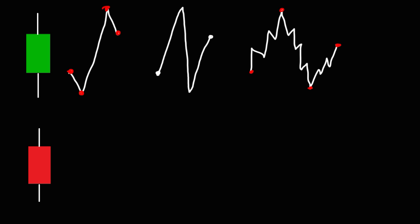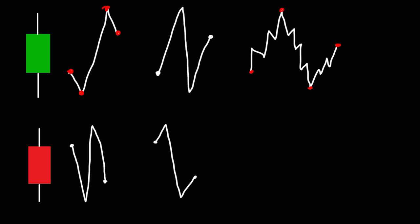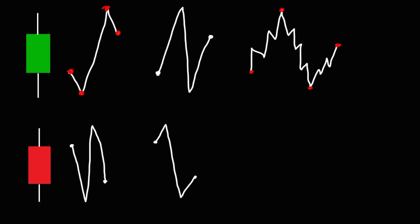For the other candlestick on the bottom — the bearish candle — the open is higher than the close when dealing with a red candle. So it can open here, go down to the low, and then back up to the high, and then down to the close. That's one option. Or, it can start at the same spot, go up to the high, down to the low, and then to the close. We can have a graph with any one of these two features, with a lot of variations in the middle. That's how you can tell the story behind a particular candlestick.